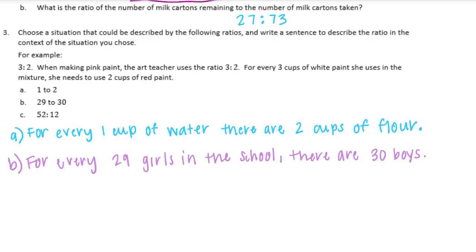And then C, we have 52 to 12, so that's a little bit more of an uneven ratio. Think about animals, maybe something at the zoo. Let's say for every 52 animals, for every 52 animals at the zoo, there are 12 zookeepers.